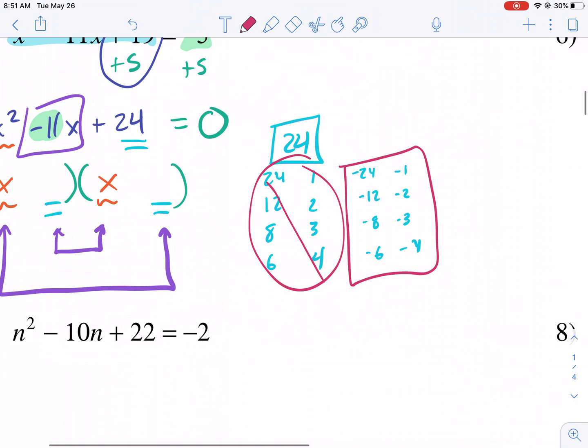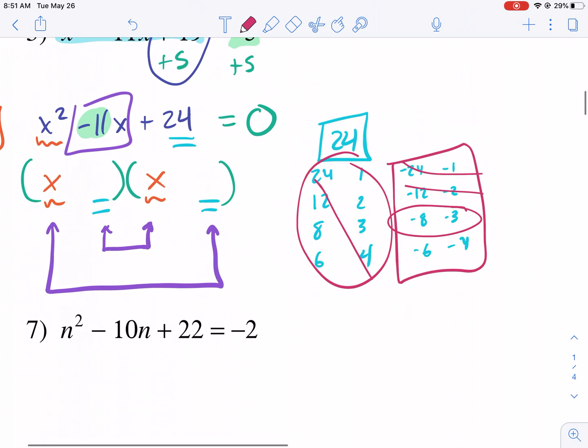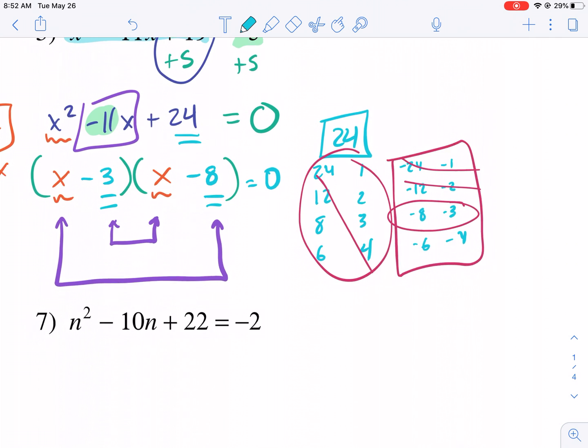Now, which of these add up to negative 11? Clearly not negative 24, negative 1, negative 12, and negative 2. We're getting closer. Here we go. We have negative 8 and negative 3. So we're going to plug those in, negative 8, negative 3. And this is the way we factor.